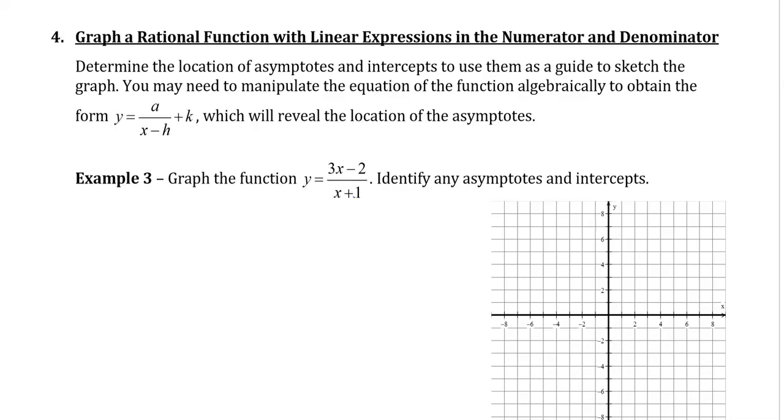In this video, I'm going to show you how to graph a rational function when the numerator and the denominator are linear functions. Now if you take a look at this example 3 here, we can see that the top and the bottom are both linear functions. Now from here, it's hard to identify the asymptotes and intercepts. So what we need to do is manipulate the function and change it to a form like this that we already know how to graph.